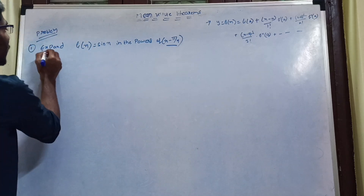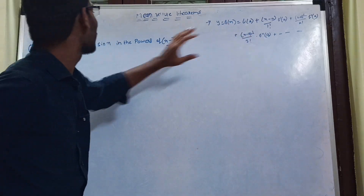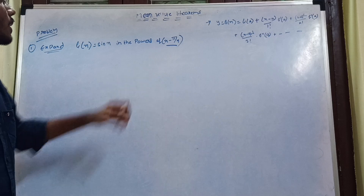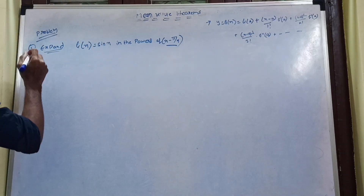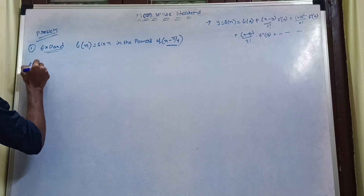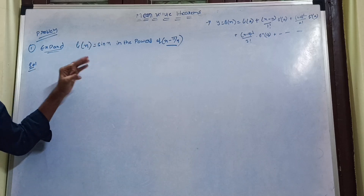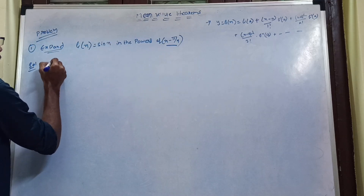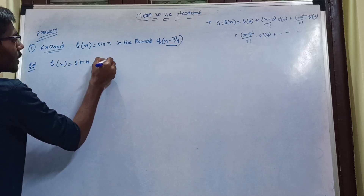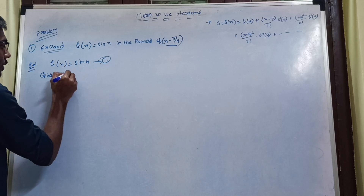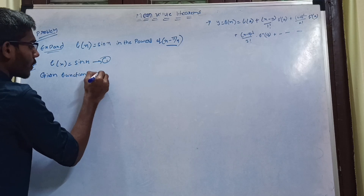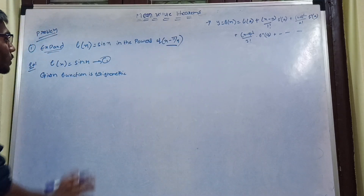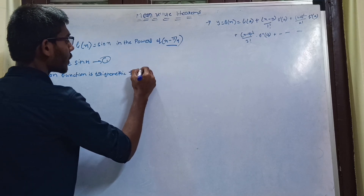Here we will first expand. The given function is f(x) = sin(x). The given function is trigonometric, and x minus π/4 is given. The given function is trigonometric, so it is continuous.